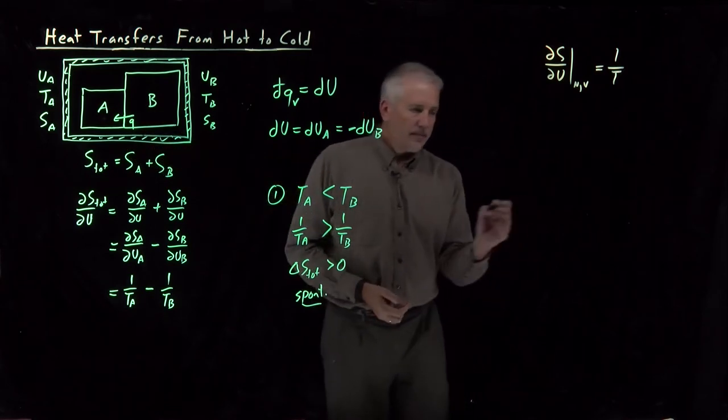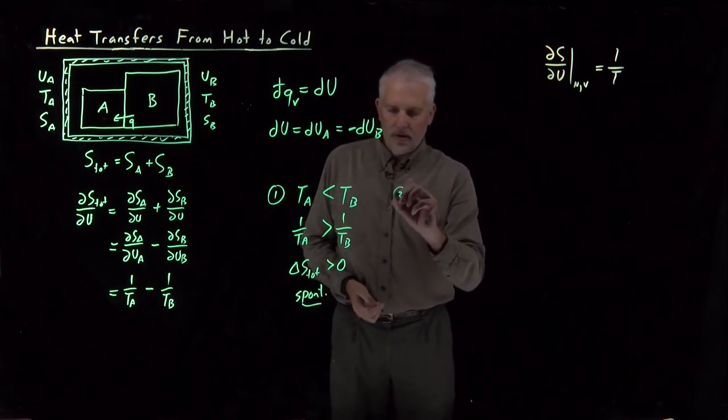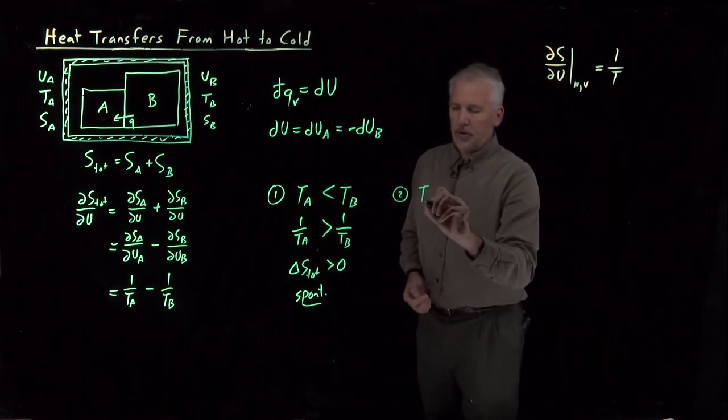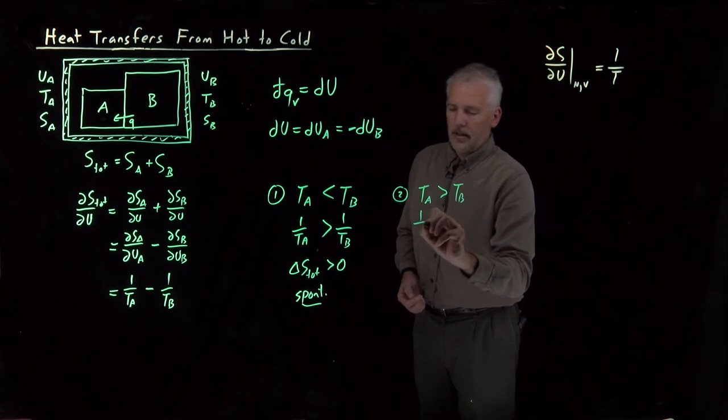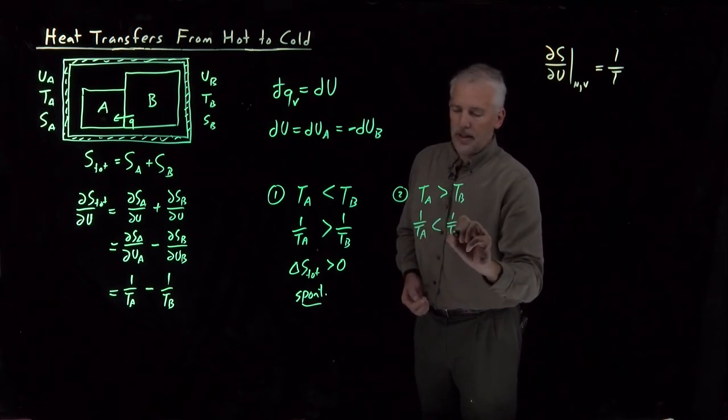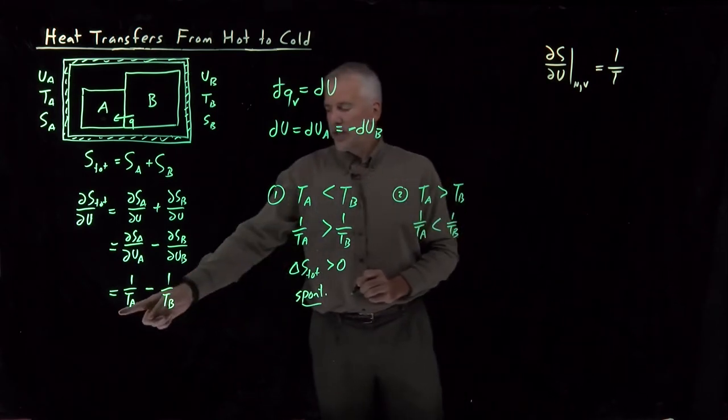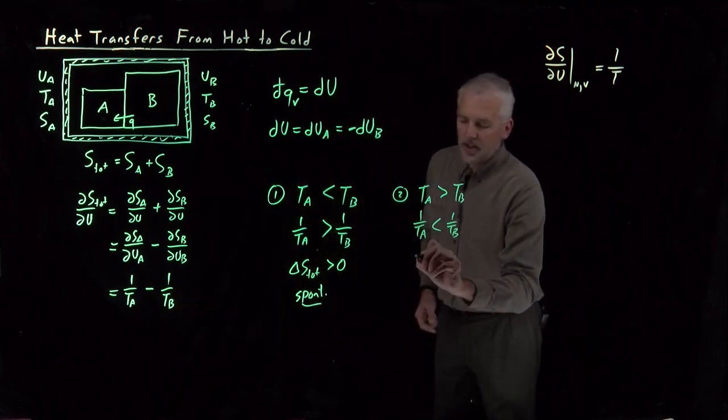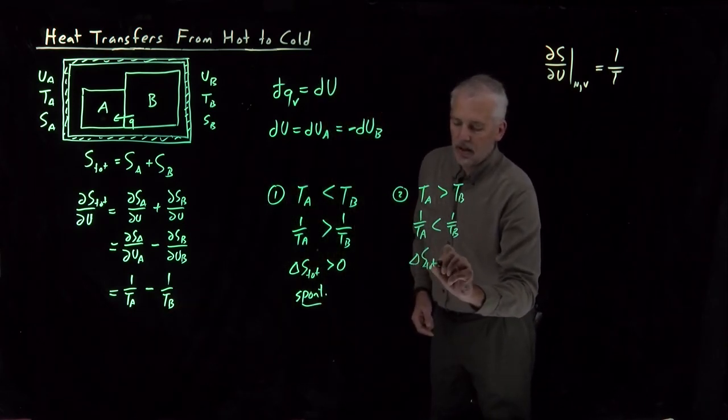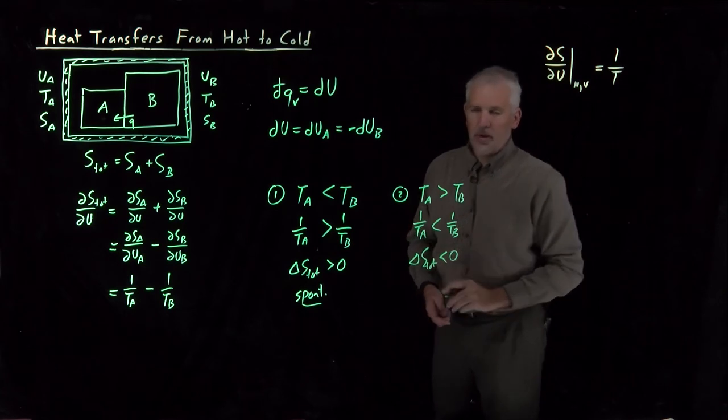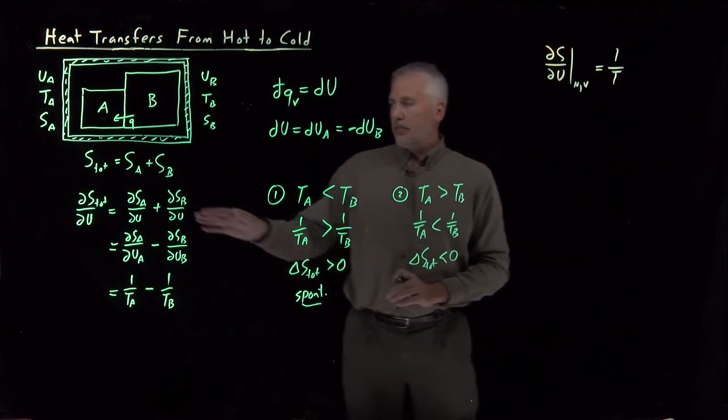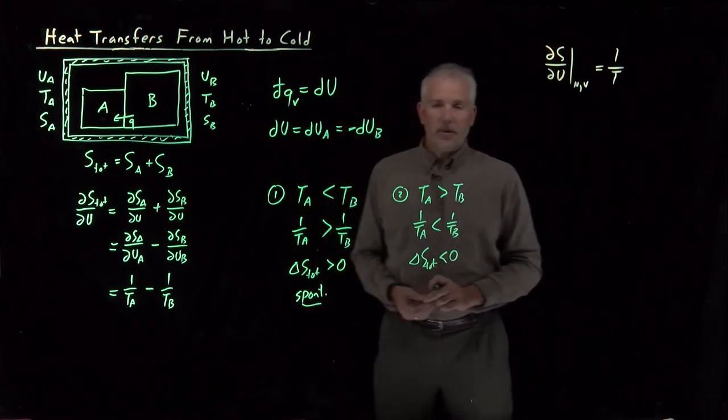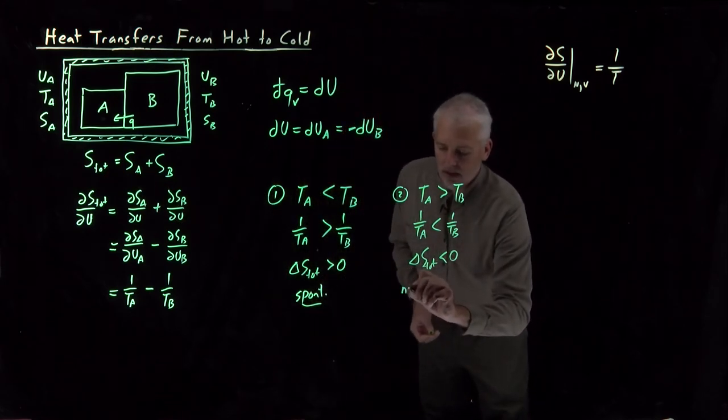On the other hand, if the opposite is true, if A is warmer than B, then 1 over TA is less than 1 over TB. And when I take 1 over TA minus 1 over TB, that change in the entropy will be a negative number. Decreasing the entropy makes the system less likely to be found in that state. So that is a non-spontaneous process.